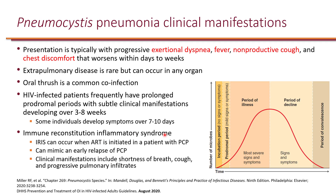The clinical manifestations include exertional dyspnea, fever, nonproductive cough, and chest discomfort, which worsen within days to weeks. This is a progressive disease, and the prodromal period can extend from three to eight weeks. In general, for any infection the phases are: incubation, prodromal period with mild signs and symptoms, period of illness, period of decline, and convalescence. In PCP in HIV patients, this prodromal period can be very extended — three to eight weeks — making it very progressive.